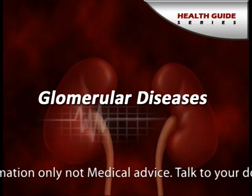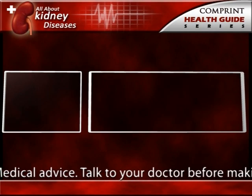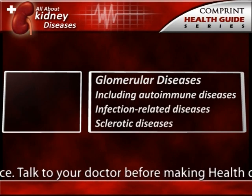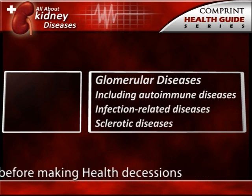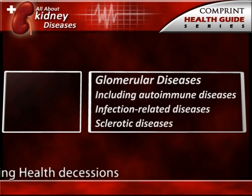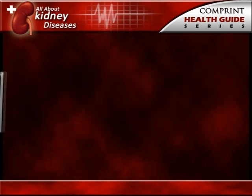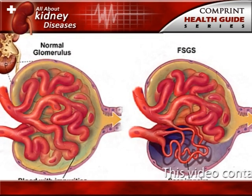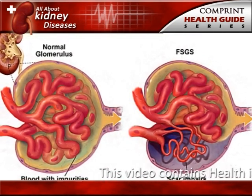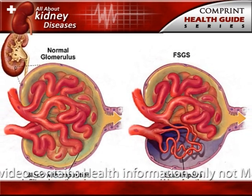Glomerular diseases. Several types of kidney disease are grouped together under this category, including autoimmune diseases, infection-related diseases, and sclerotic diseases. As the name indicates, glomerular diseases attack the tiny blood vessels, or glomeruli, within the kidney.